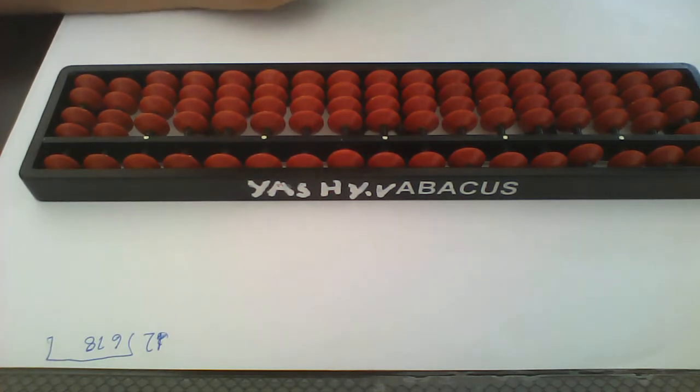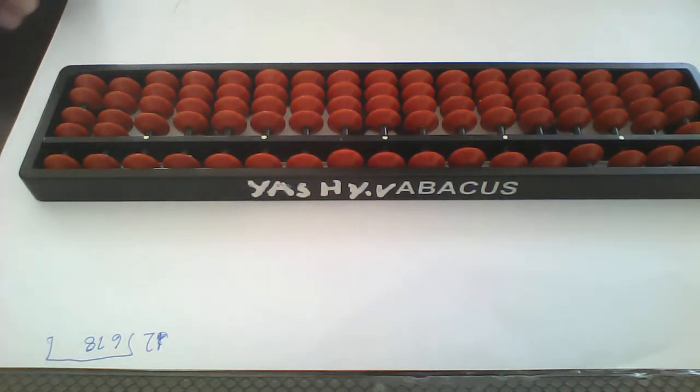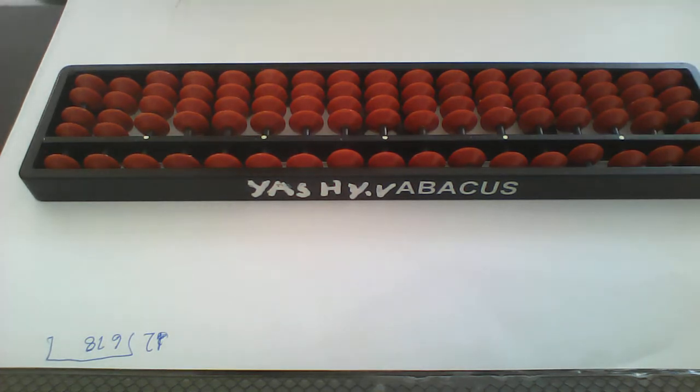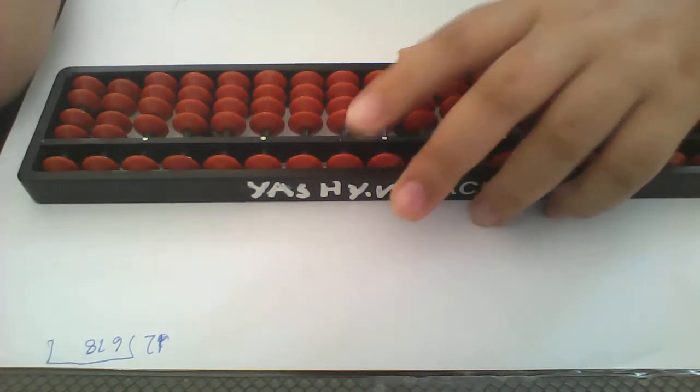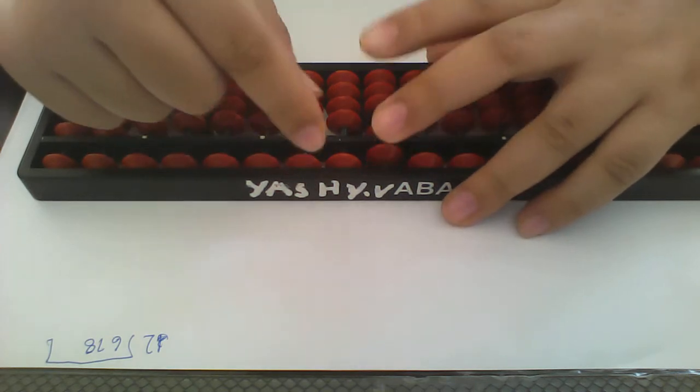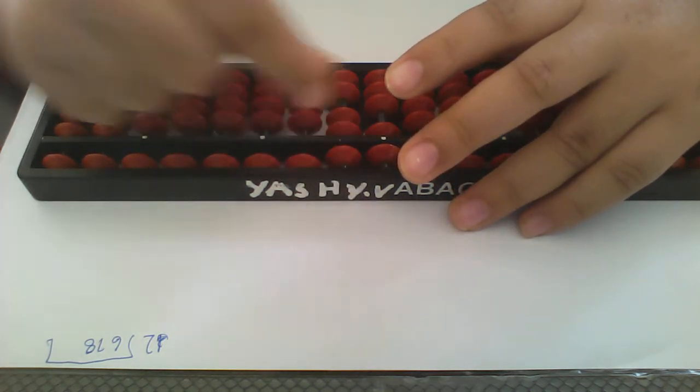And now we are going to do our division. Our sum is 678 divided by 2. So we are going to put 678.